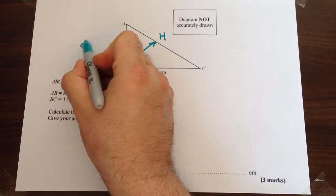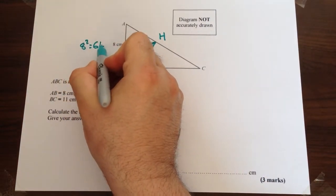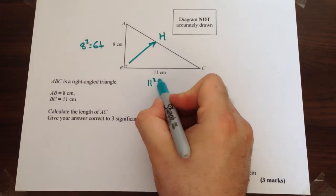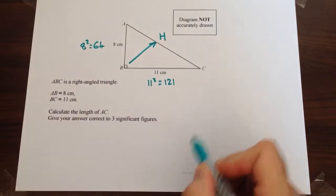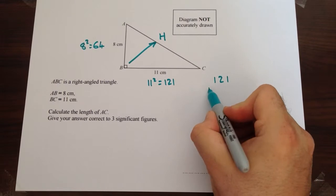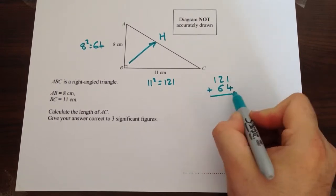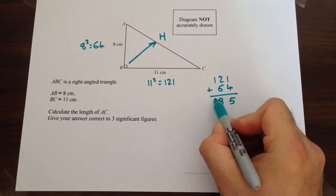So let's square this side, 8 squared is 64, 11 squared is 121, add the two together which gives you 185.